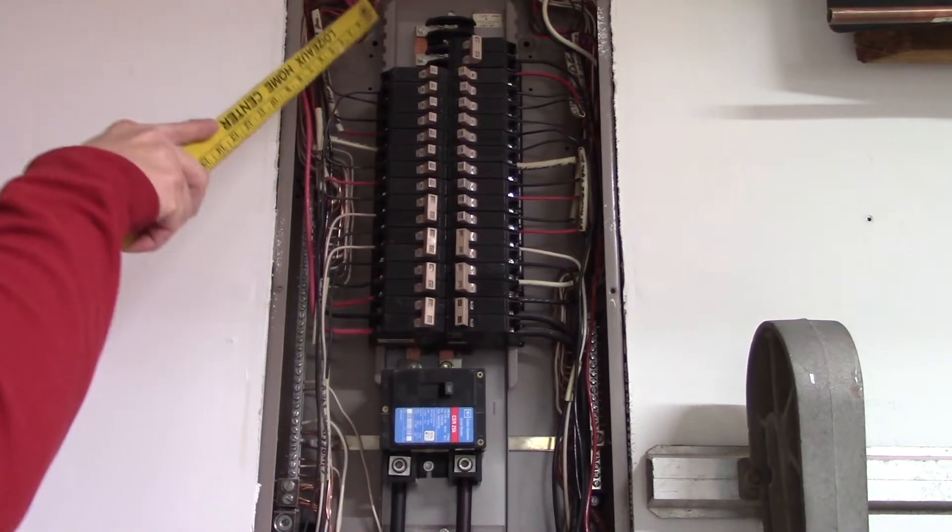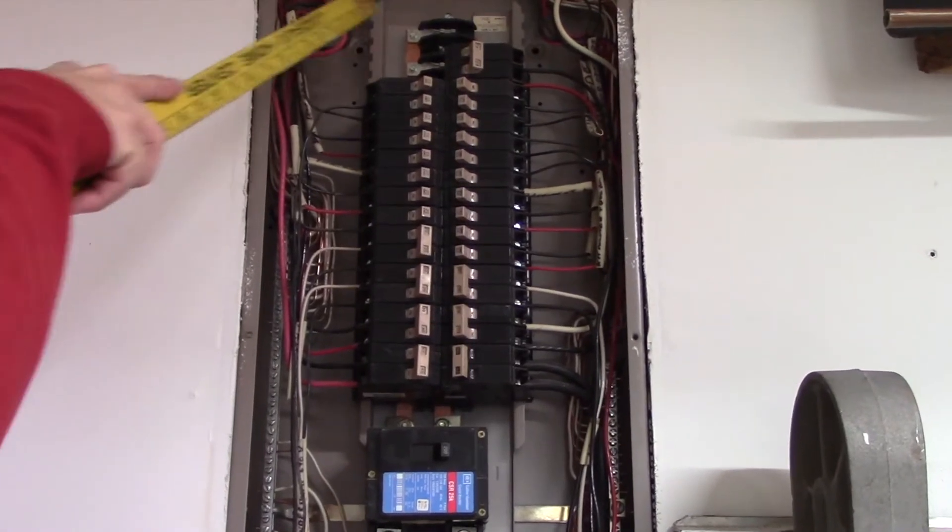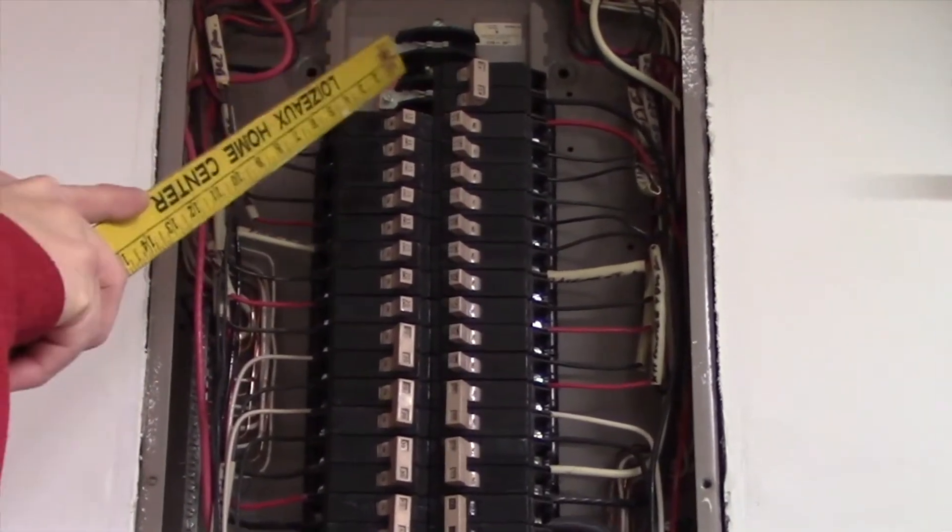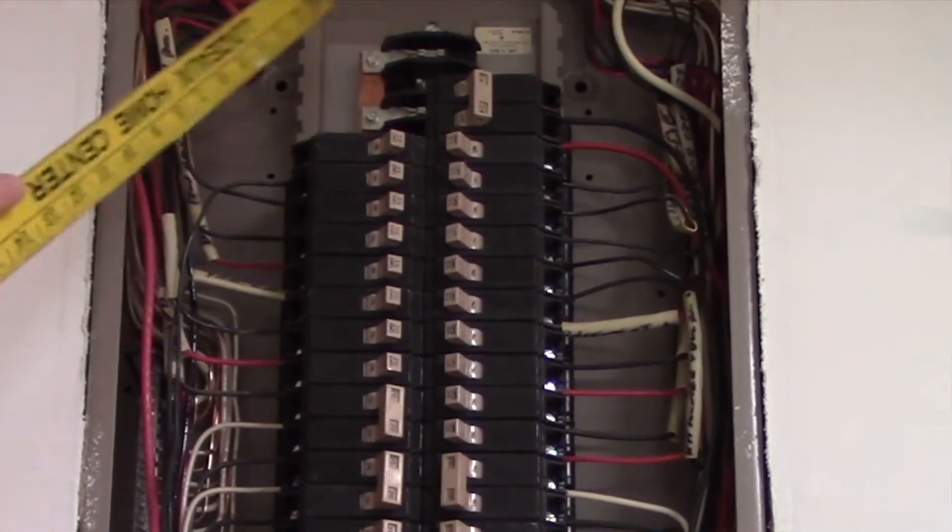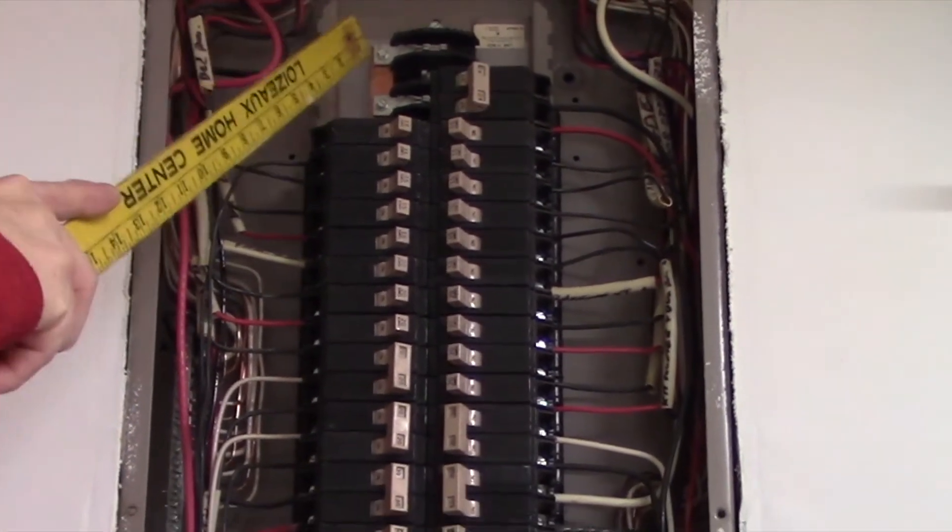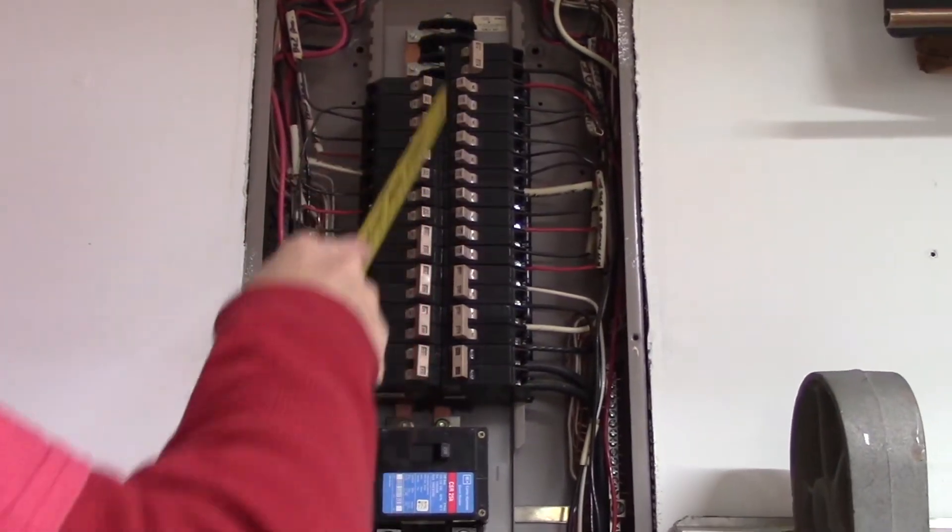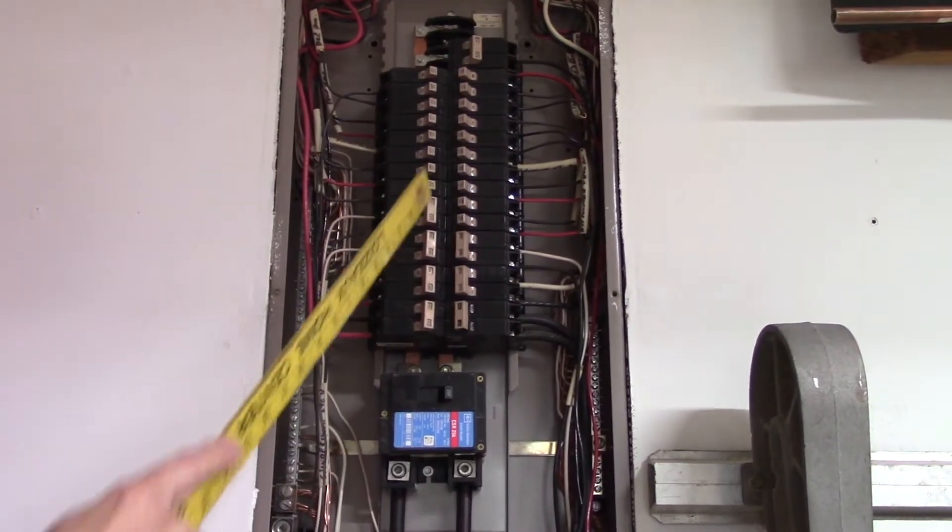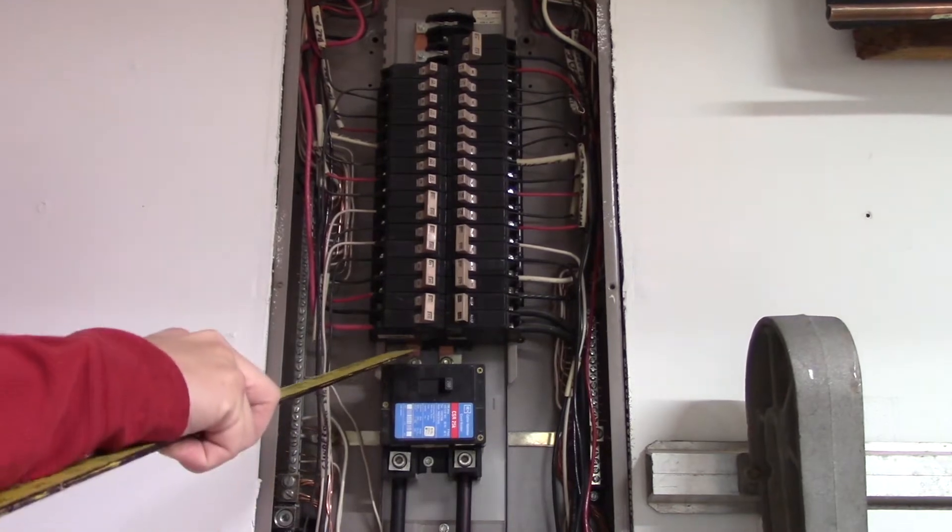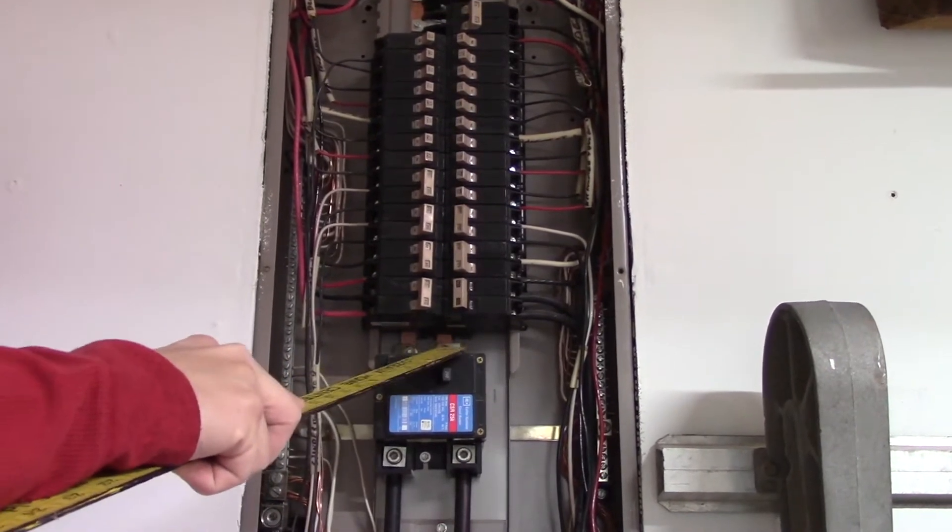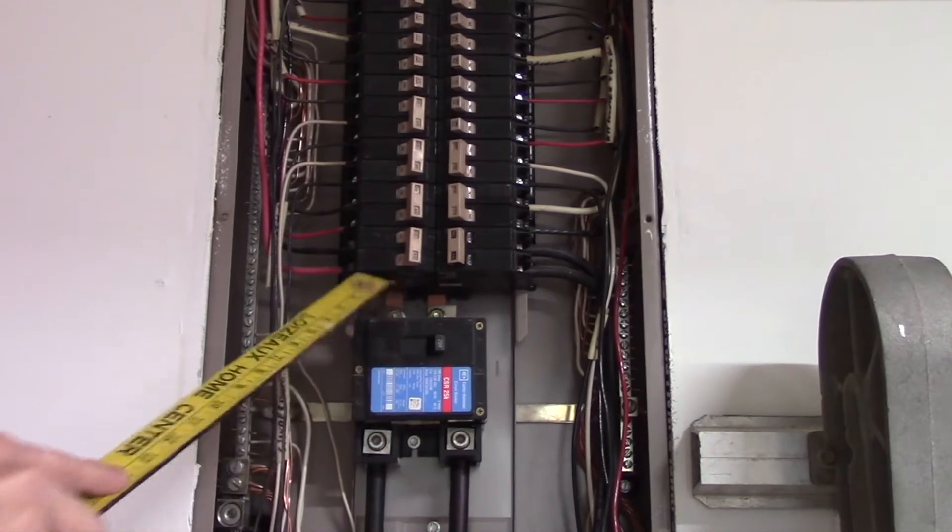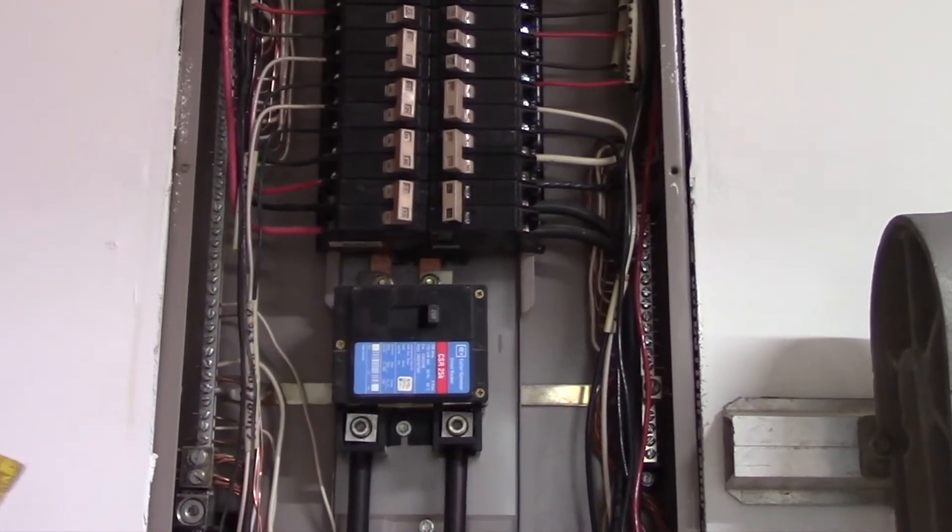Right now, see this heavy copper bar with the zinc colored terminals on it? Those have electricity going to them right now. They're on either side. There's one here and there's one here. And they run down and the breakers connect to them. All the way down here, you'll see two nuts holding the main breaker onto those. They're called bus bars.